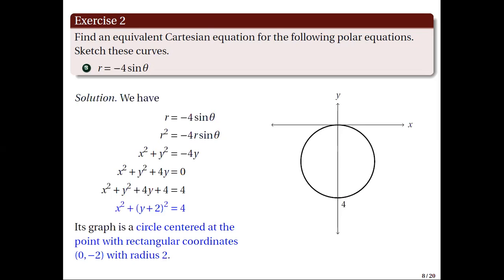Notice that polar equations of the form r equal to a, r equal to a cosine b, or r equal to a sine b, where a and b are real numbers, have circles as graphs. Also, notice that in equations similar to the previous two items, the circle passes through the pole and is centered at a point on a coordinate axis.